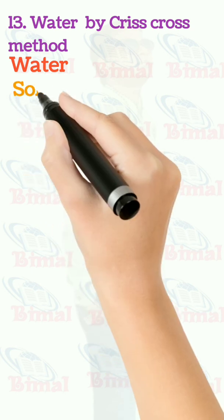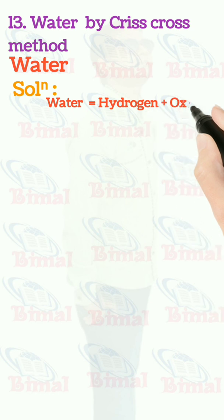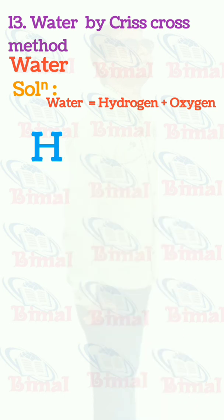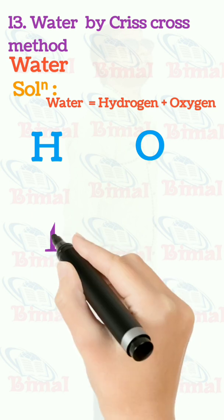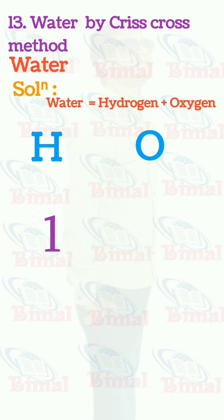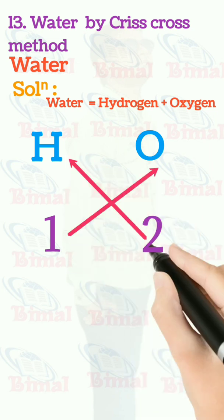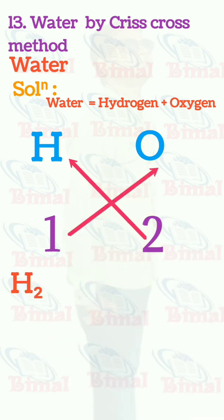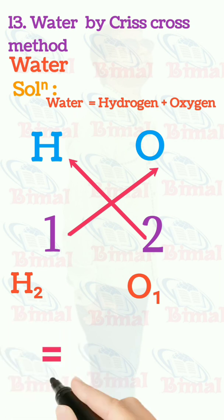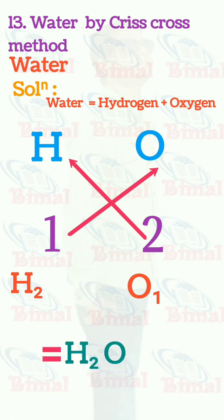Molecular formula of water by criss-cross method. Water is equal to hydrogen plus oxygen. Symbol for hydrogen is H, symbol for oxygen is O. Valency for hydrogen is 1, valency for oxygen is 2. When we do criss-cross, the valency is exchanged and we write H2 and O1. We don't write O1, just O, so H2O is the molecular formula for water.